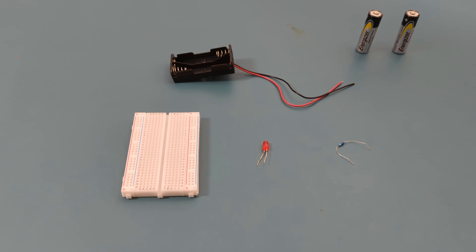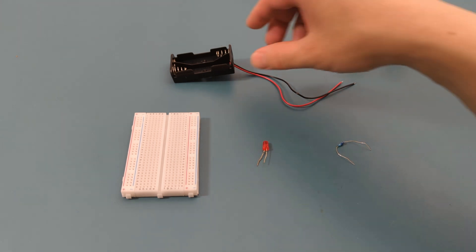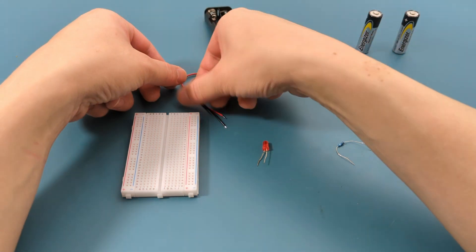Alright, now that you've got the basics down, let's build a simple circuit. For this, we'll use a battery, an LED, and a resistor. Here's what you do.